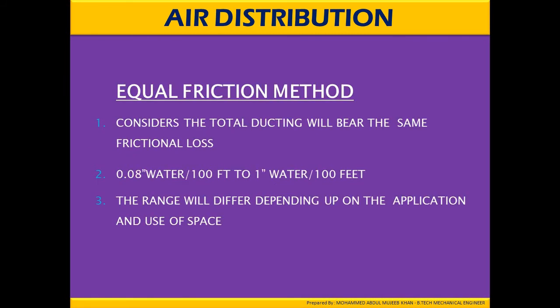The equal friction method considers that the total ducting will bear the same friction losses throughout — for example, 0.08 inches of water per 100 feet. This is a typical example where we need to consider that ducting will bear the same friction loss throughout its sizes. The range will differ depending upon the application and the usage of the space.